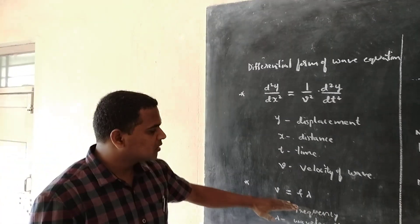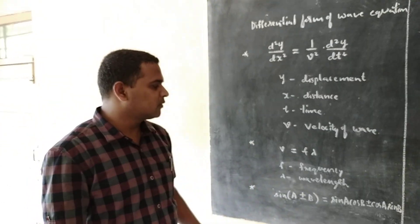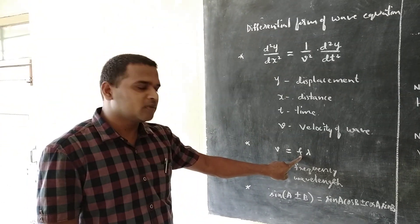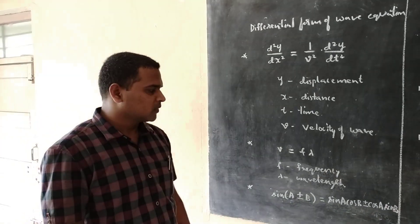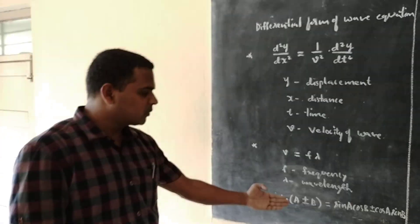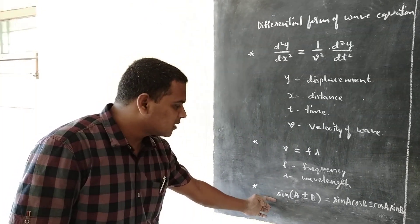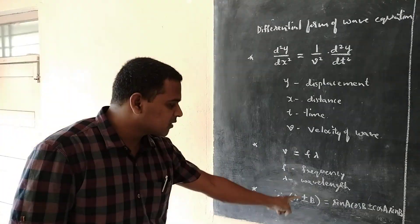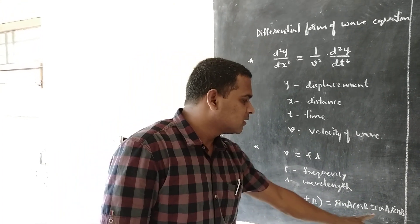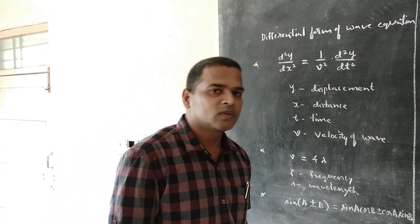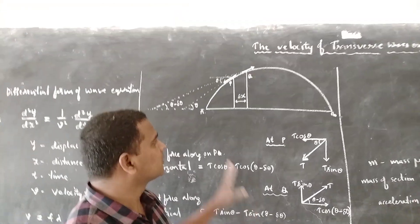The next equation is v = fλ, where v is velocity of the wave, f is frequency of the wave, and λ is wavelength of the wave. One more equation we are quite familiar with is the trigonometric identity: sin(A ± B) = sin A cos B ± cos A sin B. Now let us consider a stretched string AB.